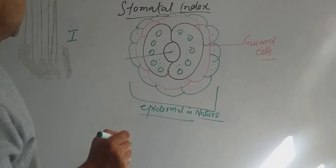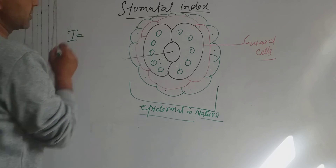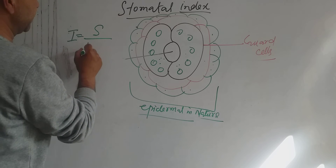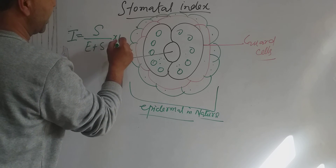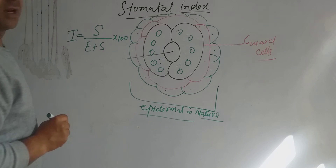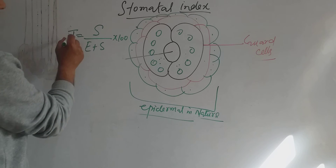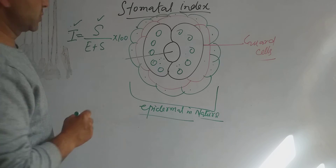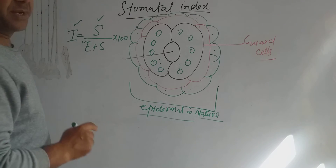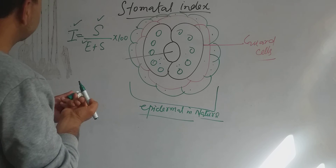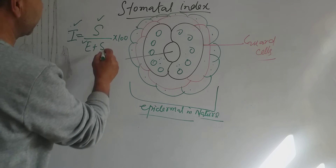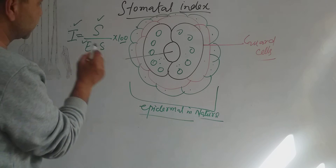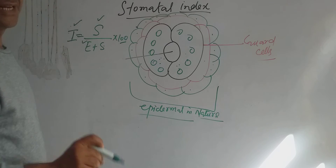The formula for stomatal index is: I = S / (E + S) × 100. Here, I represents the stomatal index, S is the number of stomata, and E is the number of epidermal cells surrounding the stomata. Multiplying by 100 gives you the stomatal index.